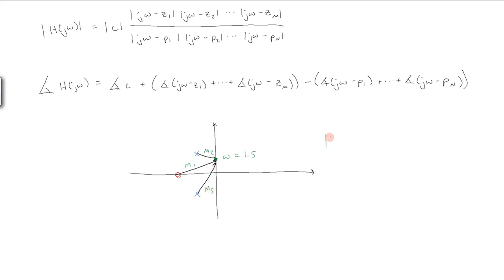Then the magnitude of h of j 1.5, since that's what we're evaluating at this particular point, is going to be equal to m1 divided by m2 times m3. The angle, or the phase,